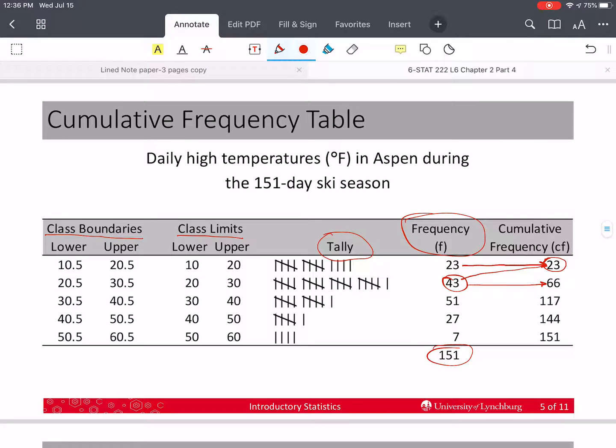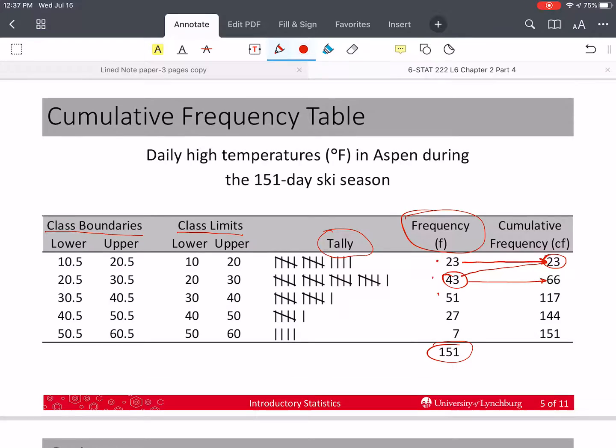Then instead of adding this and this and this and then stopping and then adding this, this one and this one and this one and this one, it's easier to use the value that's already in your calculator, the 66, add the 51, and get the 117. And you can just keep doing this until we get the total value, which is 151.